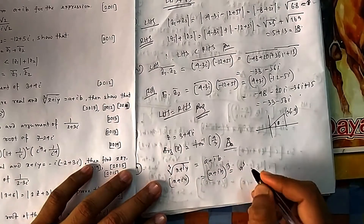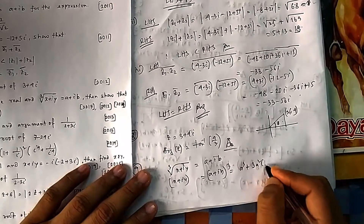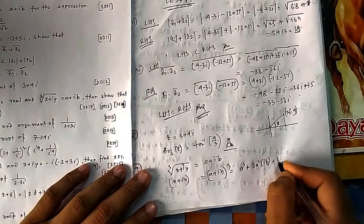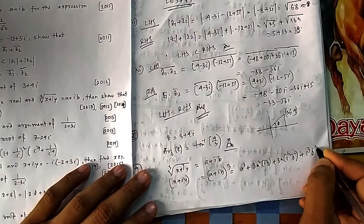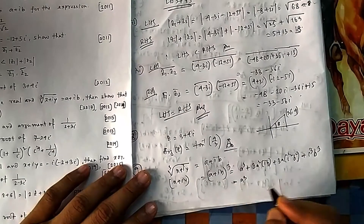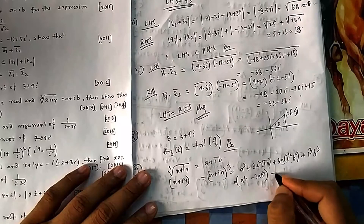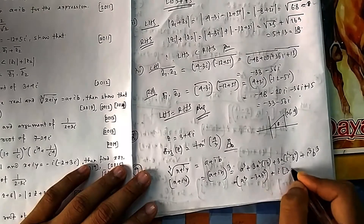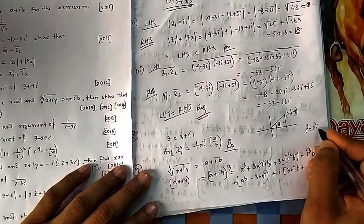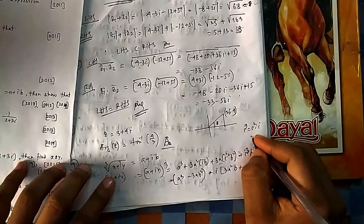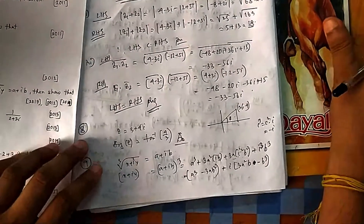Expand (a+bi)³ = a³ + 3a²(bi) + 3a(bi)² + (bi)³. Since i² = −1: the real part is a³ − 3ab², and taking i common from the imaginary terms: i(3a²b − b³). Note that i³ = i²·i = −i, so the b³ term becomes −b³ when factored.